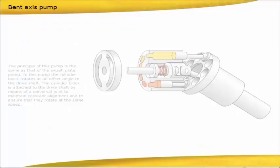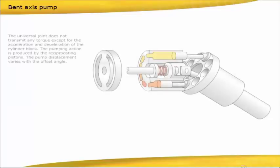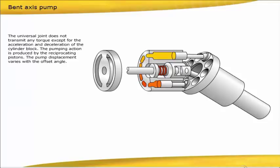The principle of this pump is the same as that of the swashplate pump. In this pump, the cylinder block rotates at an offset angle to the driveshaft. The cylinder block is attached to the driveshaft by means of a universal joint to maintain constant alignment and to ensure that they rotate at the same speed. The universal joint does not transmit any torque except for the acceleration and deceleration of the cylinder block. The pumping action is produced by the reciprocating pistons. The pump displacement varies with the offset angle.